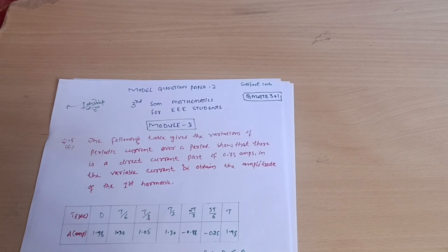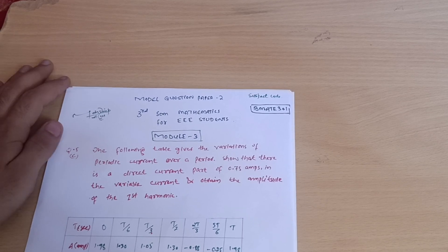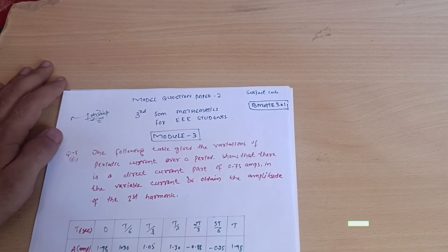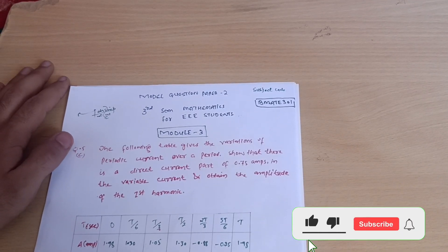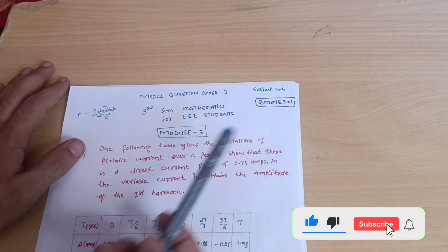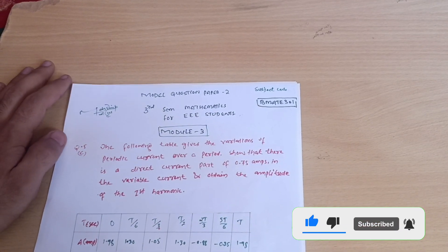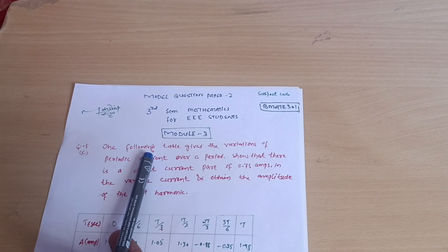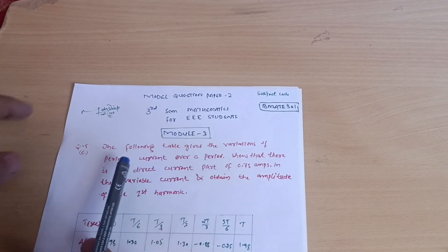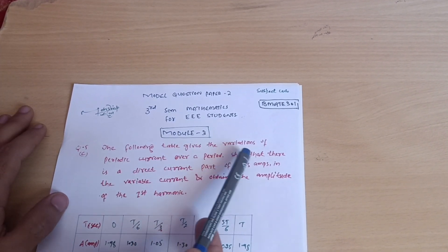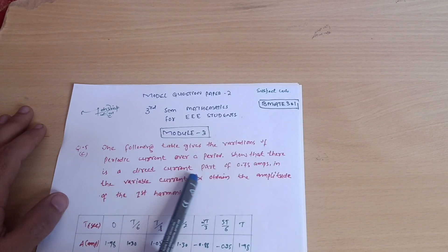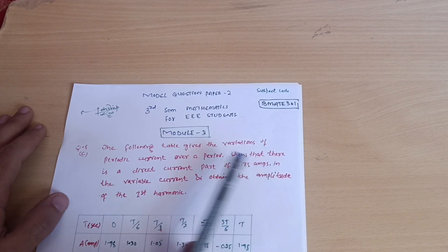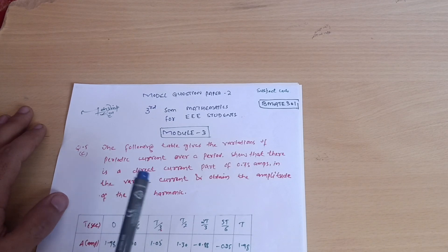Hello everyone and welcome back to my channel. We are discussing the model question paper for the triple stream students for the mathematics subject, subject code BMAT E301. Today we will discuss question number 5C of the model paper. The following table gives the variations of periodic current over a period — show that there is a direct current part of 0.75 amperes and obtain the amplitude of the first harmonic.